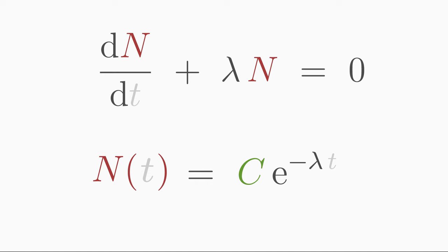After all, in the decay law, c gives the number of atomic nuclei that were present at the beginning of your observation. So you need an initial condition as additional information to the differential equation. It could be, for example, like this: n of 0 is equal to 1000.